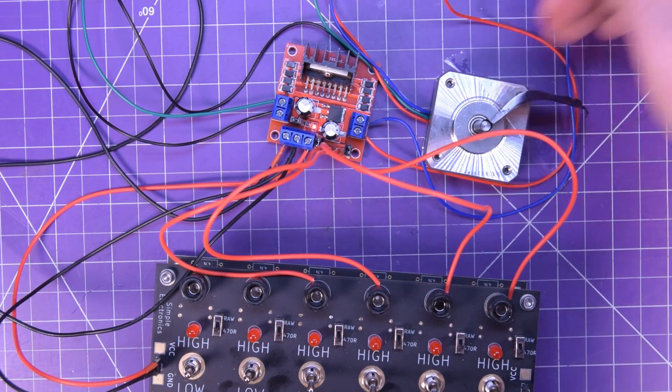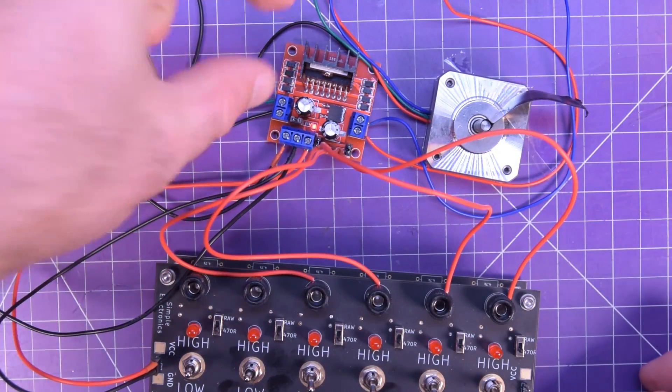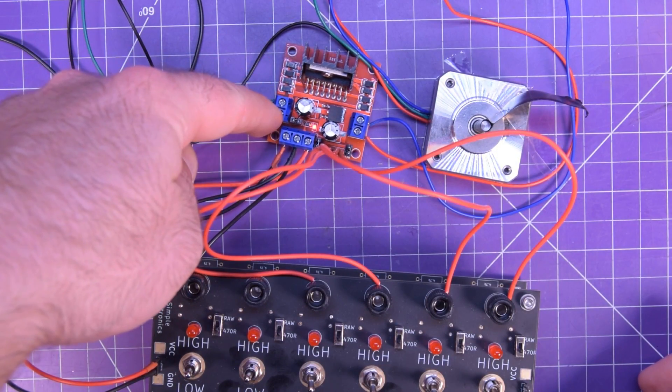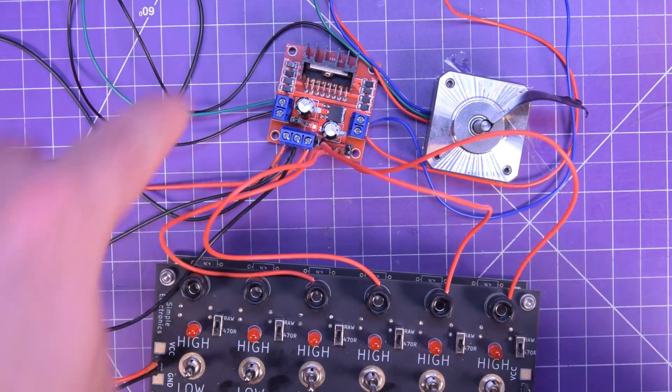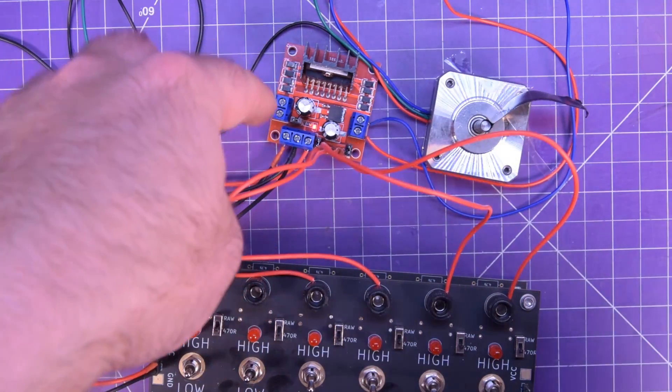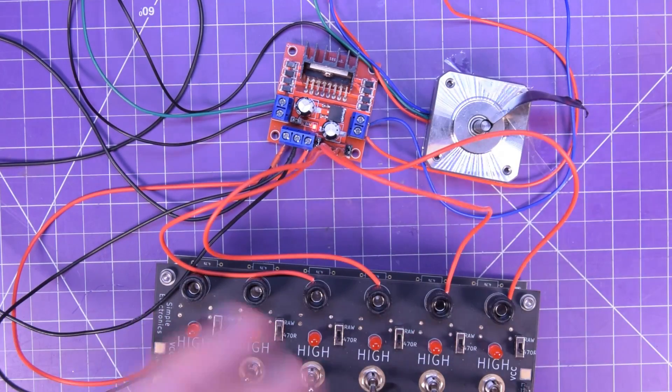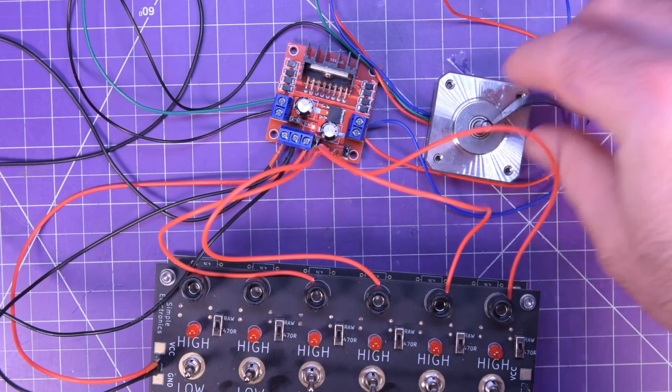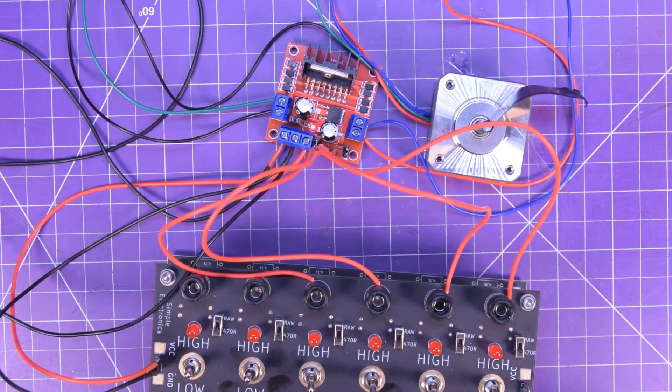There we go. So we almost made like a quarter turn there just by changing the polarities. So, you know, it'd be positive negative, and then positive negative, and then negative positive positive, then negative positive, positive negative, negative positive, negative positive, back and forth, back and forth. And you do that enough and that will step all the way around.